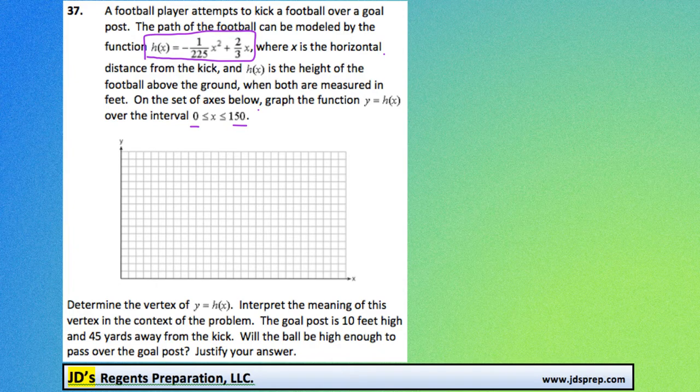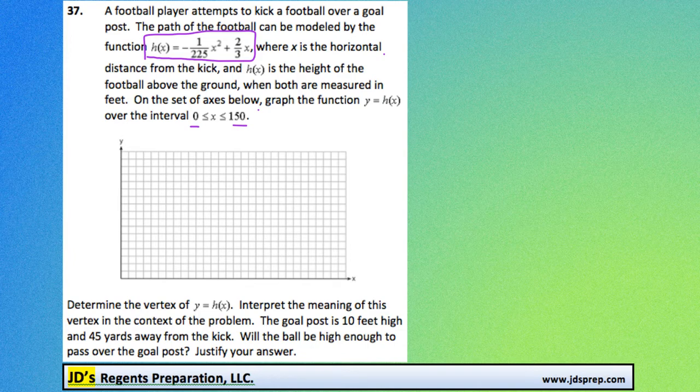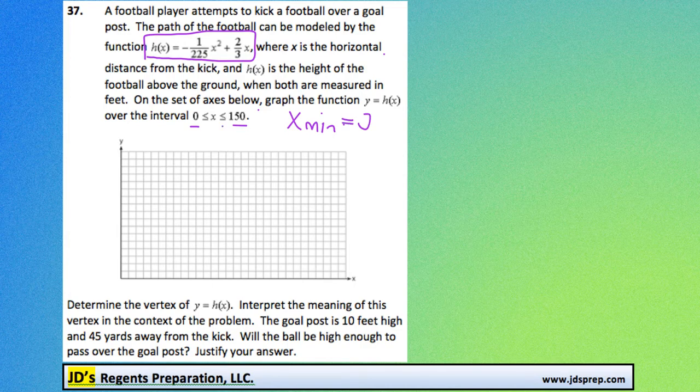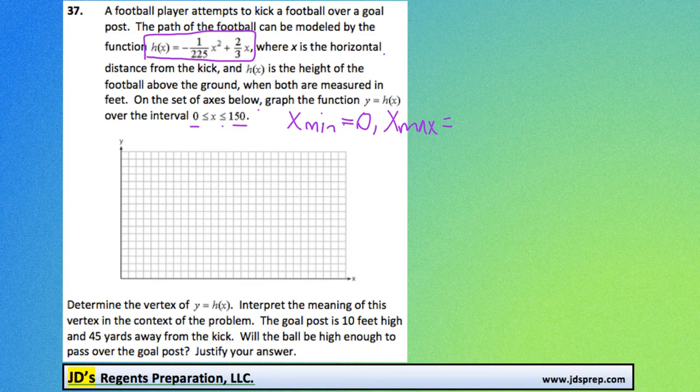I found that the window settings for x, it would make sense for the x minimum value to be 0, because that's what it says here. And then the x maximum to be probably just a little bit more than 150 just to be on the safe side, so I'd do 160.